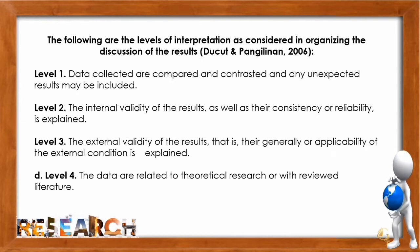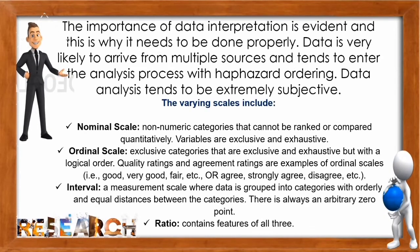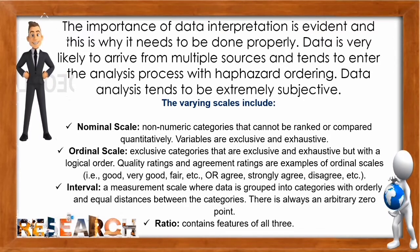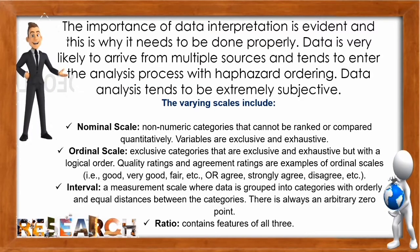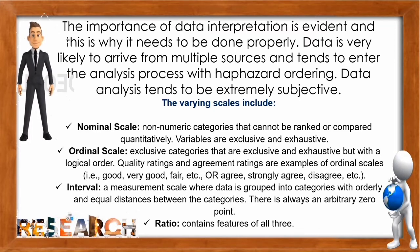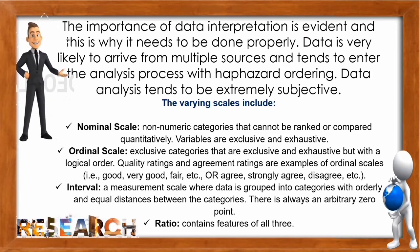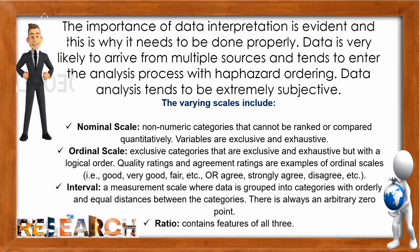Take note that the importance of data interpretation is evident, and this is why it needs to be done properly. Data is very likely to arrive from multiple sources and tends to enter the analysis process with haphazard ordering. Data analysis tends to be extremely subjective. The varying scales include nominal scale, ordinal scale, interval, and ratio. For nominal scale: non-numeric categories that cannot be ranked or compared quantitatively — variables are exclusive and exhaustive. For ordinal scale: categories that are exclusive and exhaustive but with logical order. For interval: a measurement scale where data is grouped into categories with orderly and equal distances between them, with an arbitrary zero point. For ratio: it contains features of all three.